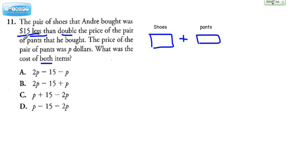So let's just think about what 15 less looks like all by itself because the shoes, the pair of shoes that he bought was $15 less than double the price of the pair of pants. Now, they want us to use P for pants. So if we double the price of the pair of pants, isn't that going to be 2 times P? And if we're going to take 15 less than that, aren't we subtracting 15 from that? All right, so that's just the price. That's for the shoes.